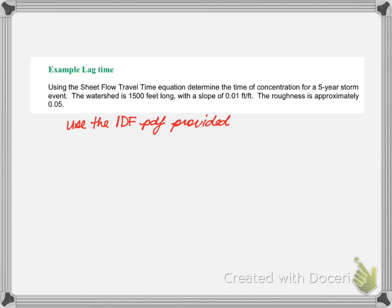If you're given a watershed that's 1,500 feet long and a slope of 0.01, the roughness of the site is 0.05. I'm providing you the IDF curve attached to this video in Blackboard for you to use as the IDF curve to determine the rainfall intensity that goes into the equation. If you have any questions, please send me an email, and I will get back to you as soon as possible.